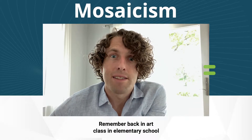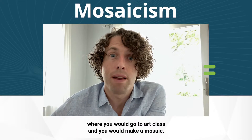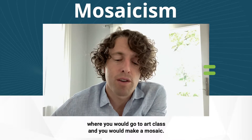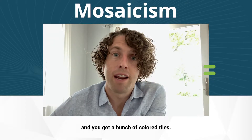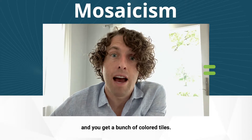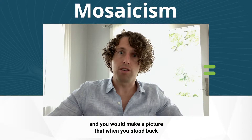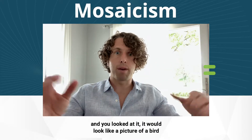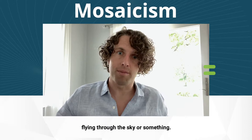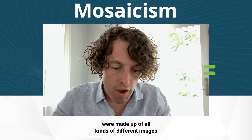Remember back in art class in elementary school where you would make a mosaic? You'd get a square or a plate and a bunch of colored tiles, and you would put them all together to make a picture that when you stood back and looked at it, it would look like a picture of a bird flying through the sky or something. When you got close, you could see that the blue tiles were made up of all kinds of different images and pictures and colors.